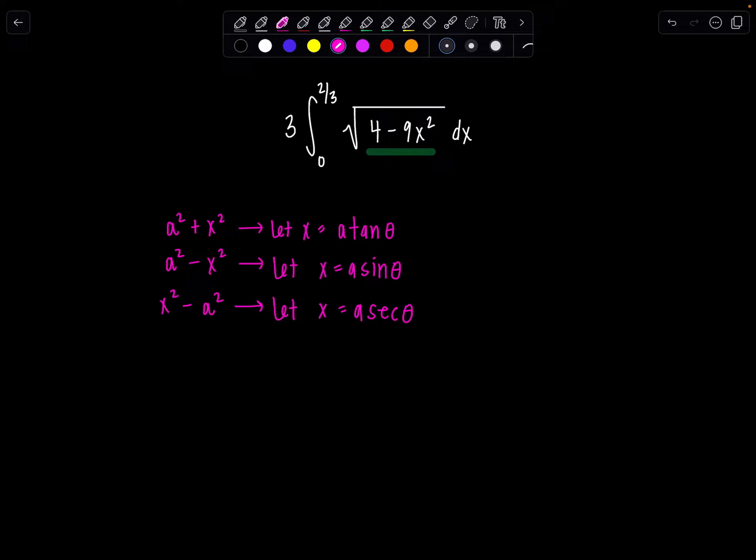So which of these three forms does the radicand match? We have a constant minus a variable quantity squared. So that's going to be option number 2 right here involving sine theta.